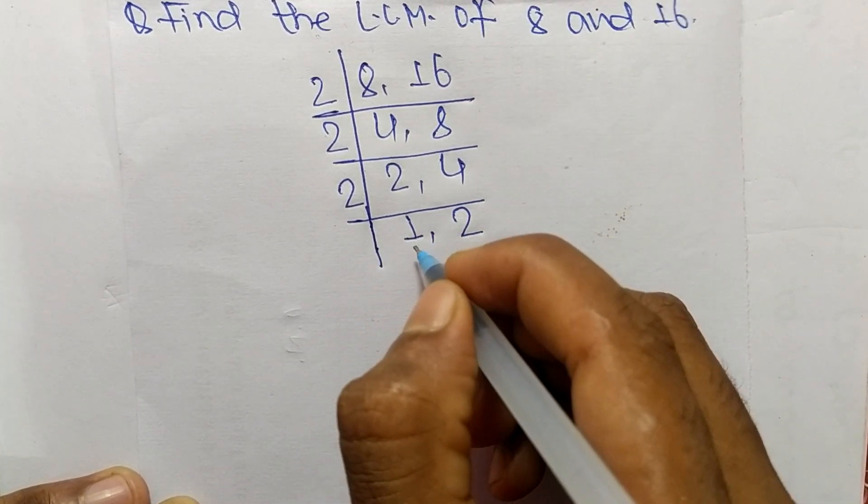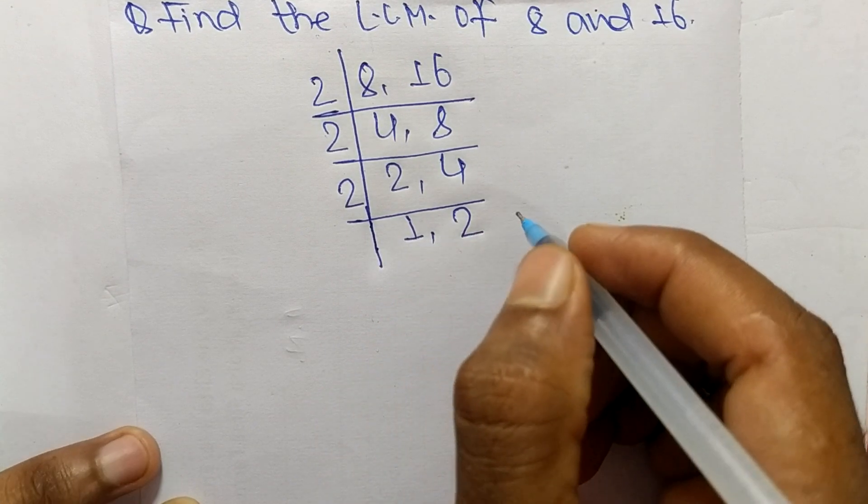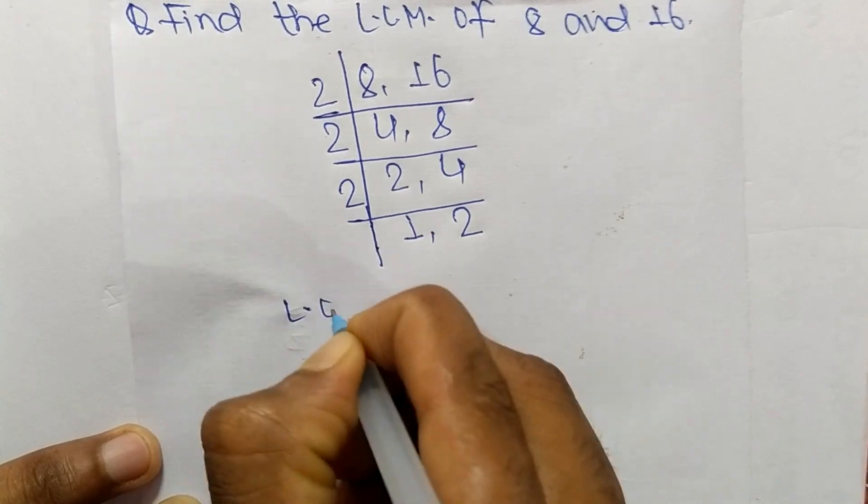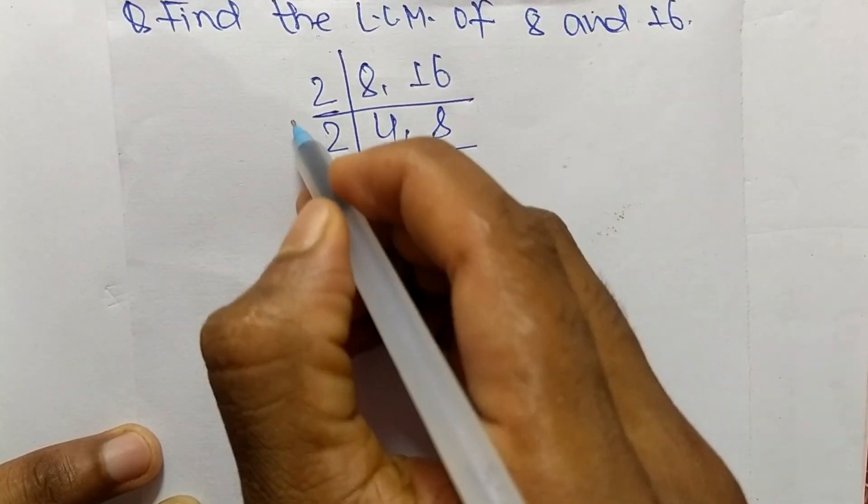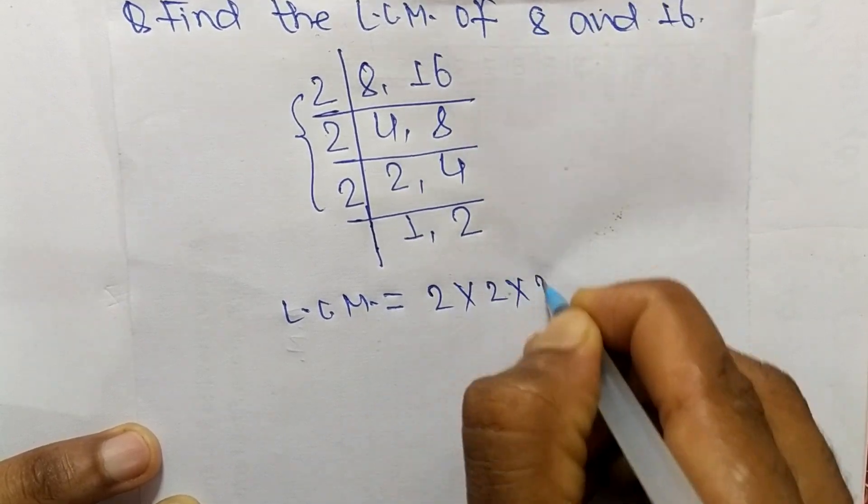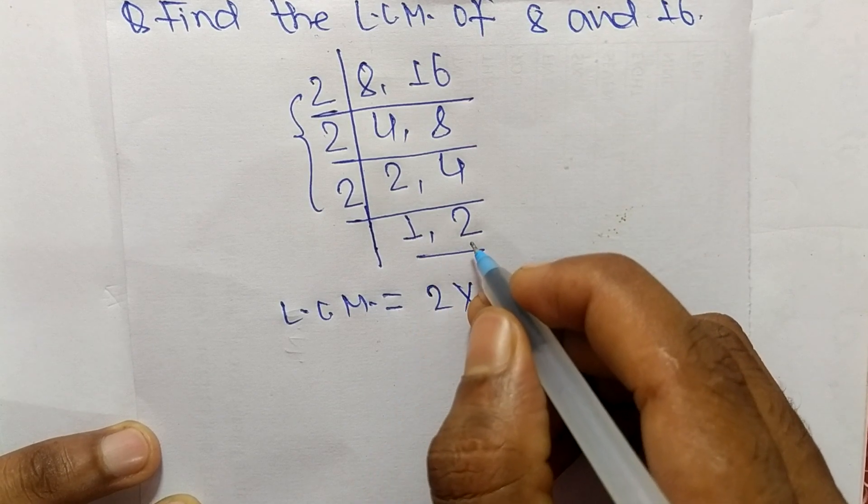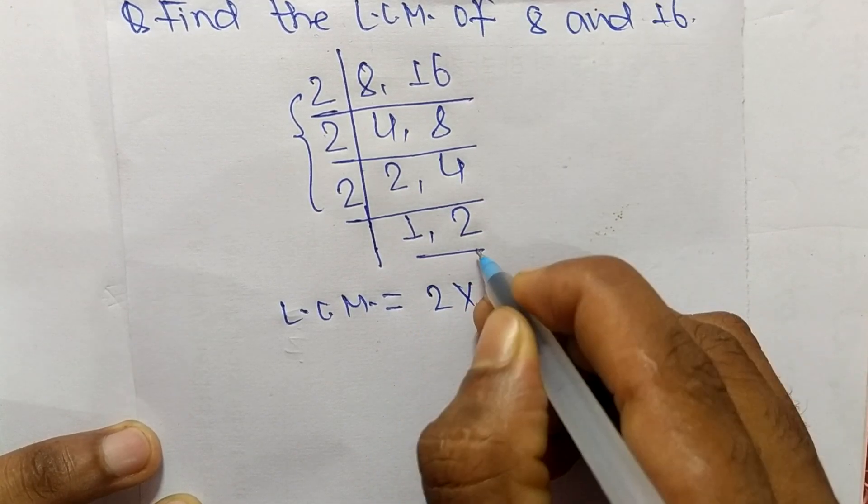So now we have 1 and 2 which can't exactly be divisible by same number. So now LCM is equal to from this part it is 2 times 2 times 2 and from this part we have 1 and 2 and we take here only 2.